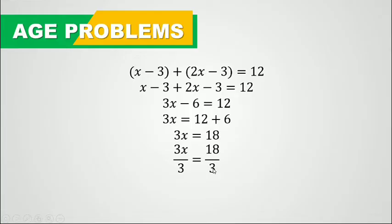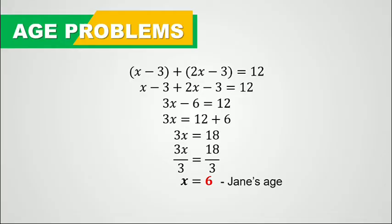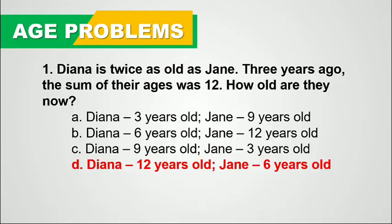So x equals 6. Since we let x be Jane's age, Jane's age is 6 years. And since Diana's age is twice Jane's age, Diana's age is 2 times 6, which is 12. Therefore, Jane's age is 6 while Diana's age is 12. The correct answer is letter D — Diana is 12 years old while Jane is 6 years old.